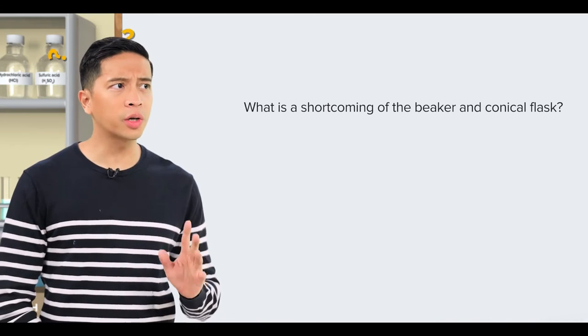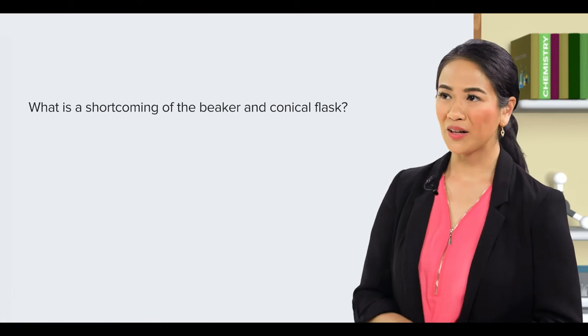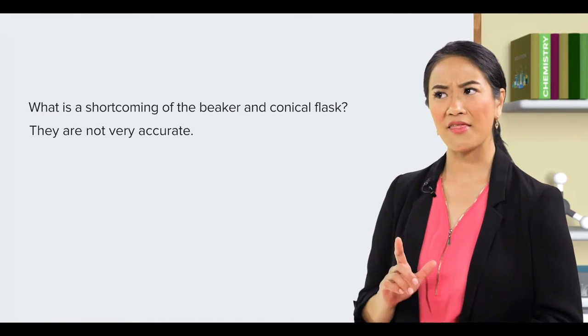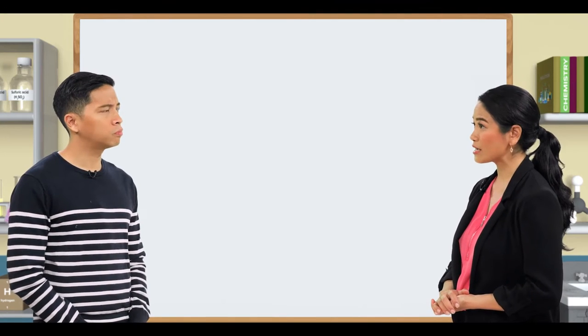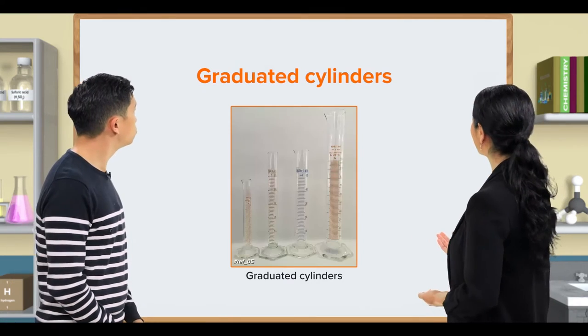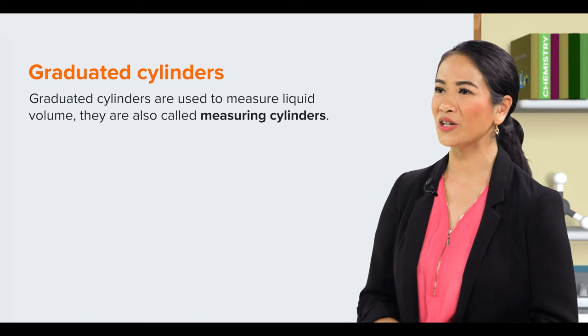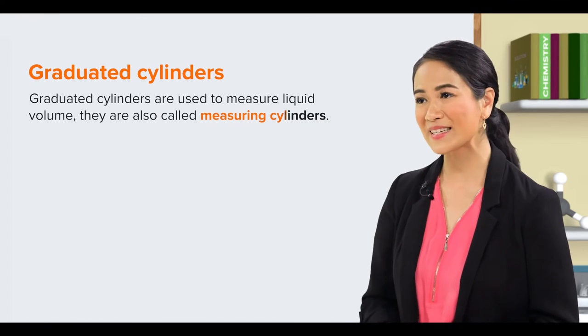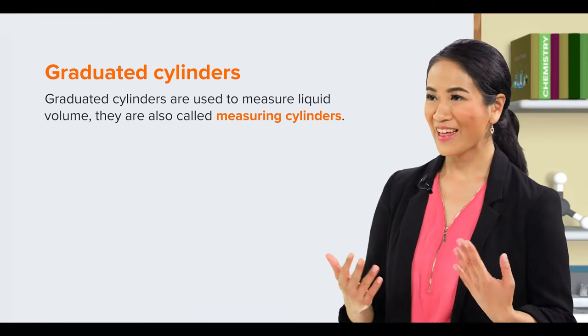So, what's a shortcoming of the beaker and conical flask? Well, both the beaker and conical flask are not exactly that accurate. So, to make accurate measurements, we use graduated cylinders. Because these graduated cylinders are used to measure liquid volume, they're also called measuring cylinders. I noticed that they come in different sizes.